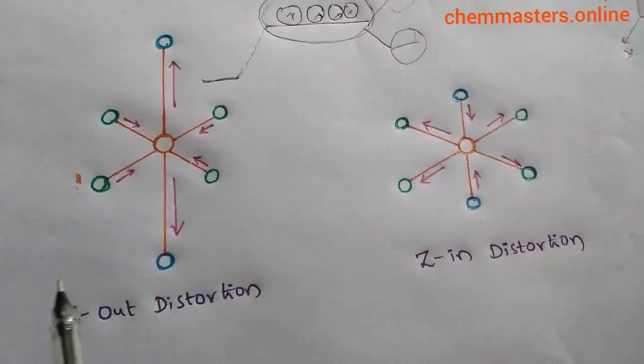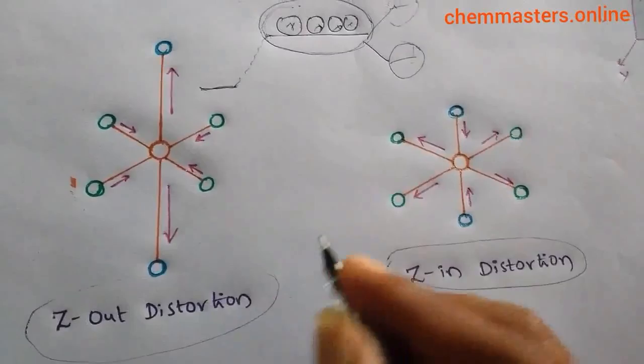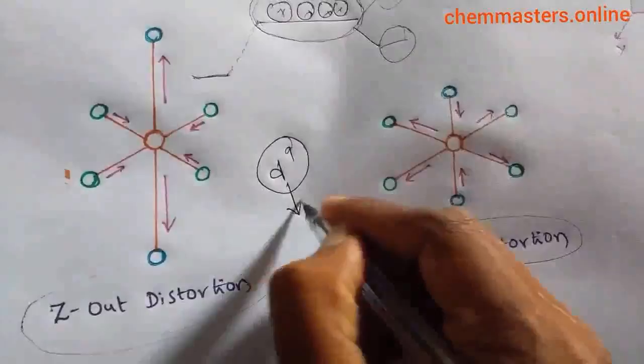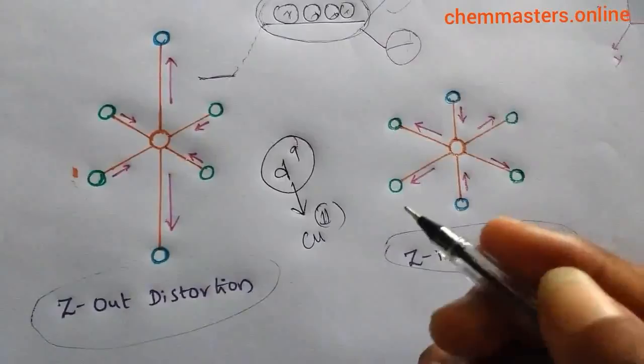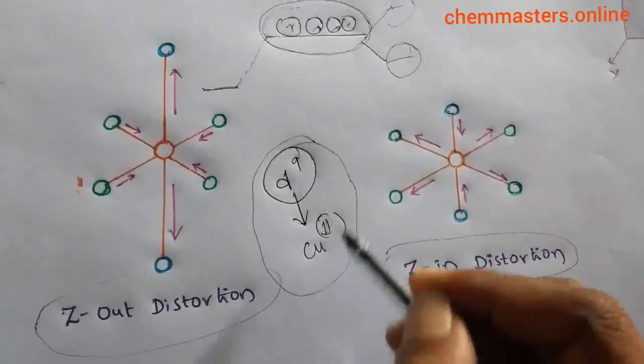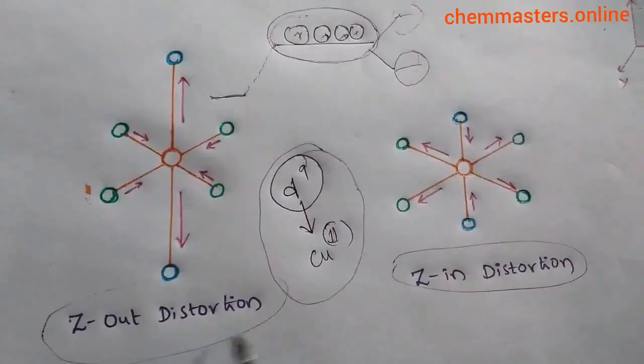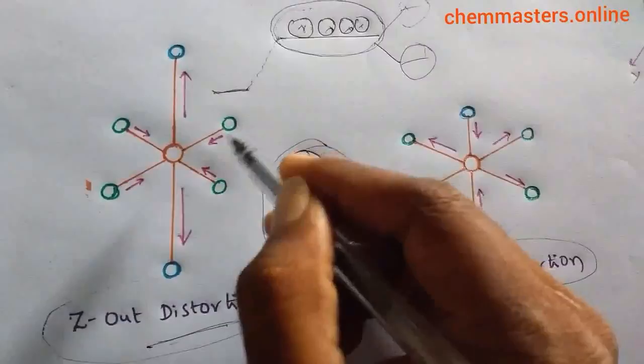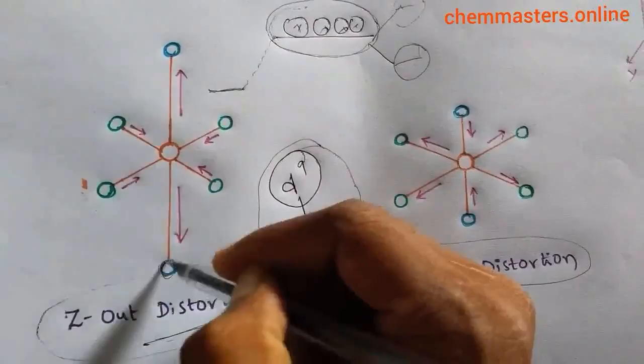In these two diagrams, I am going to show you that one is Z-out distortion and another is Z-in distortion. This is very possible for D9 electronic configurations of transition metal atoms. The best example for D9 is copper(II), and Jahn-Teller Distortion is well explained using this D9 electronic configuration with copper(II).